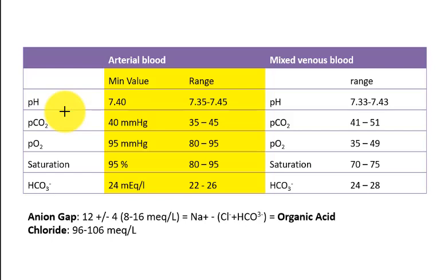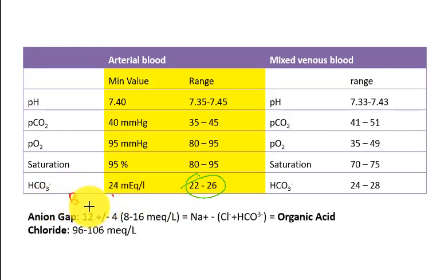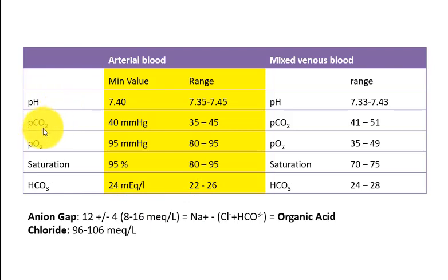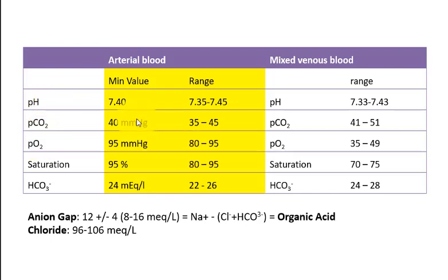Now let's review normal values you need to remember. Bicarbonate: it starts with 'Bi', and bi means 2, so 22 — bicarbonate is 22 to 26. Carbon dioxide: carbon has 4 valence, so think 4 and 4, so average pCO2 is 40. pH for arterial blood is 7.35 to 7.45. Oxygen saturation of 80 to 90 percent is normal.